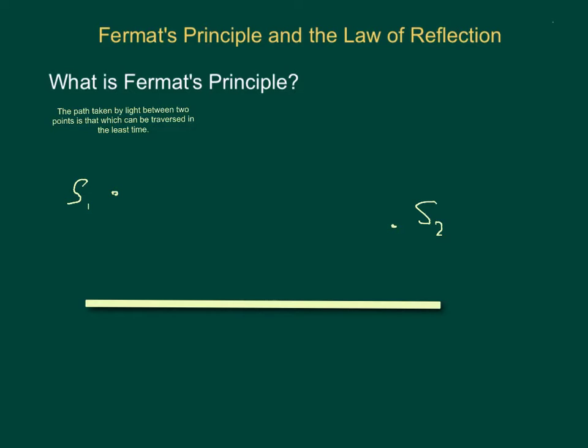Well let's use Fermat's Principle to find out. We're going to need to start by setting up some parameters. Let's call this distance here, I'm sorry for the lack of straight line, we'll call it A. And we'll call this distance here B. We'll call the horizontal distance between S1 and S2, this distance here, capital L.